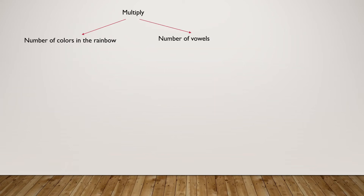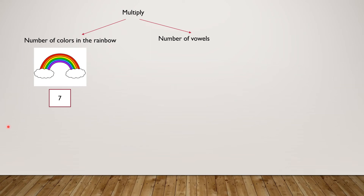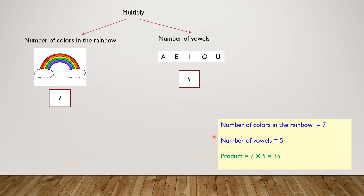Let's review this. So we have to multiply the number of colors in the rainbow by the number of vowels. How many colors are there in the rainbow? Right! There are seven colors in the rainbow. How many vowels are there in the alphabet? Right! There are five vowels: A-E-I-O-U. So the number of colors in the rainbow is seven. The number of vowels is five. Product equals seven times five, which is thirty-five. Yay! Let's go to the next problem.